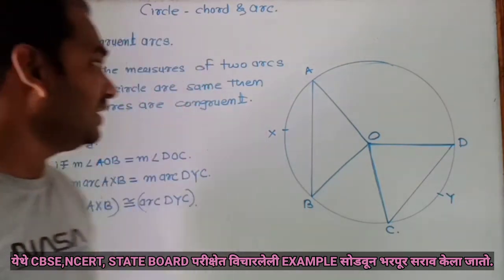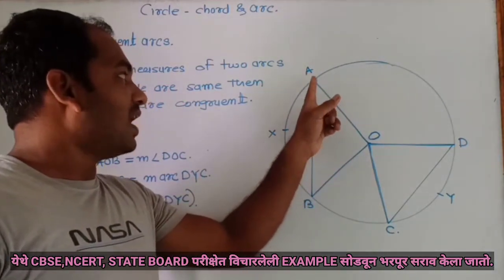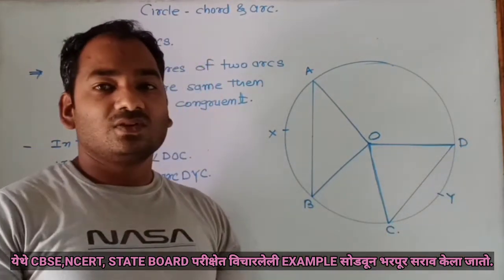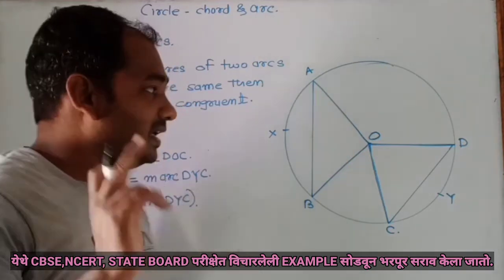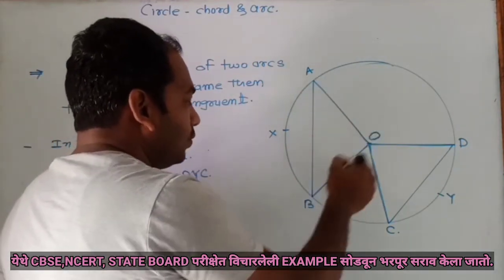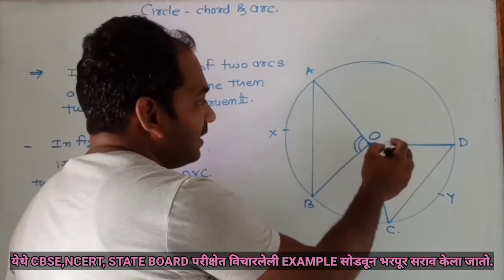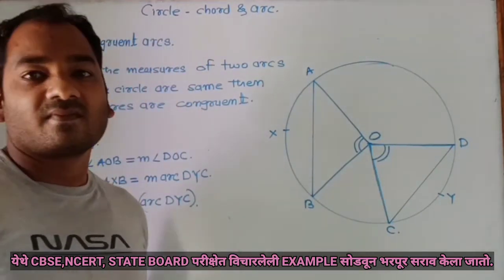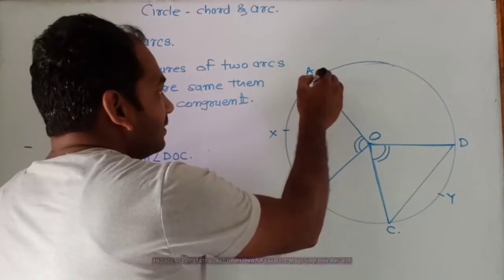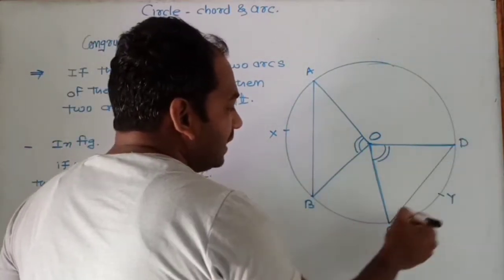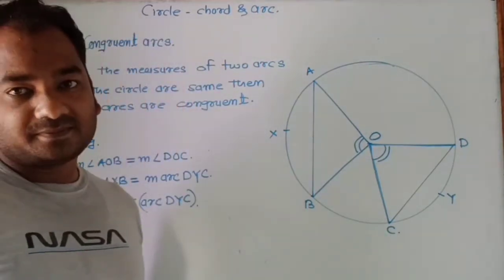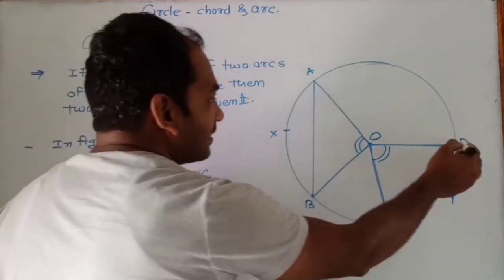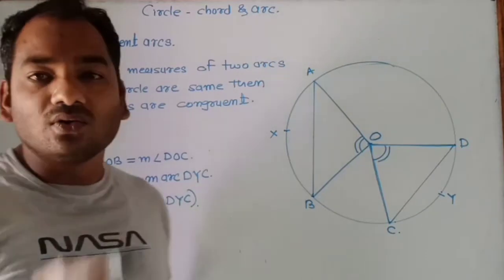See in the figure here, we have two arcs: arc AXB and arc DYC. These are two minor arcs. If angle AOB is equal to angle DOC, then we say arc AXB and arc DYC have the same measure. That means arc AXB and arc DYC are congruent arcs.